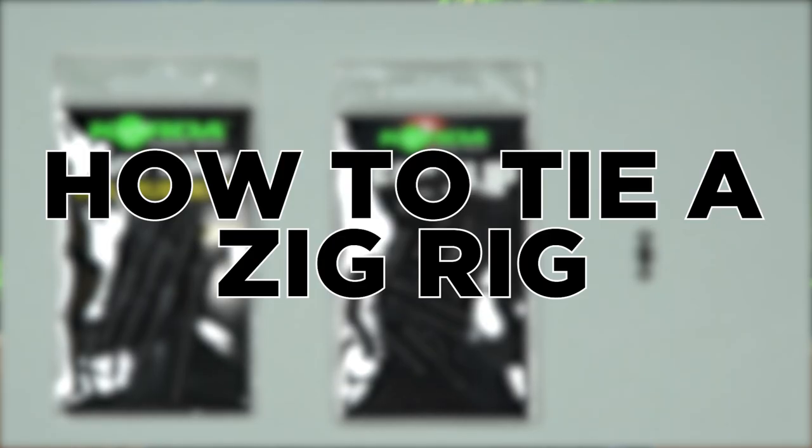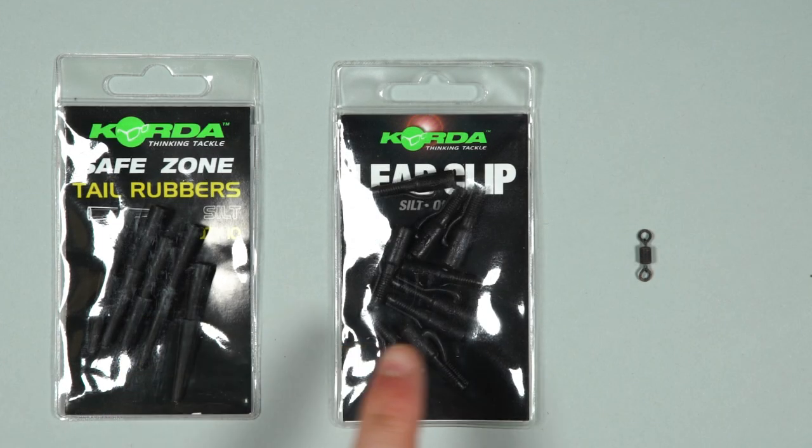To tie a zig rig you will need the following components. A tail rubber and lead clip.